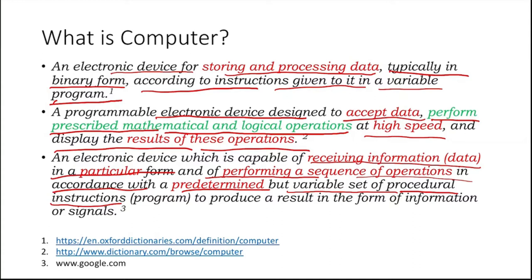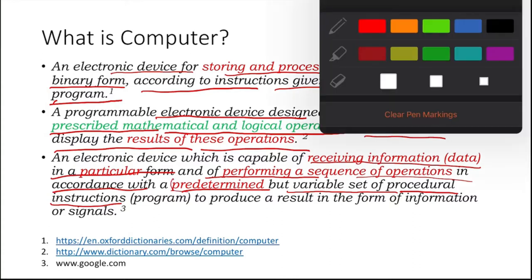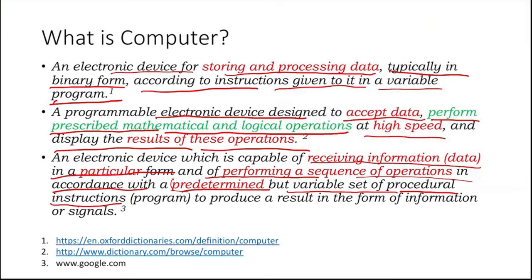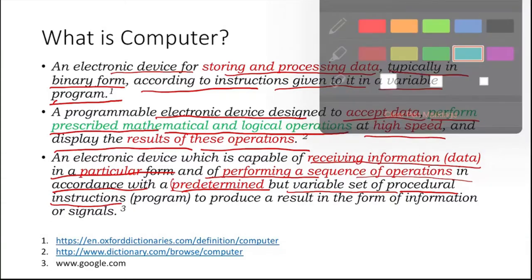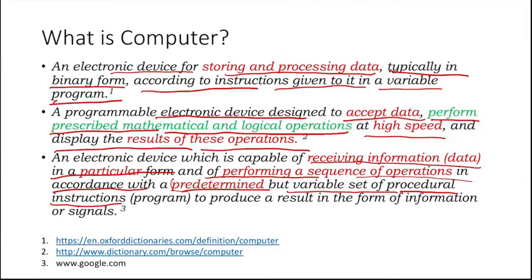So from that last definition, the phrase 'predetermined but variable set of procedural instructions' is basically the definition of a program — a set of instructions that produces a result in the form of information or a signal. This definition is more elaborative and expanded.